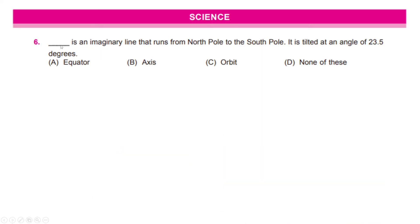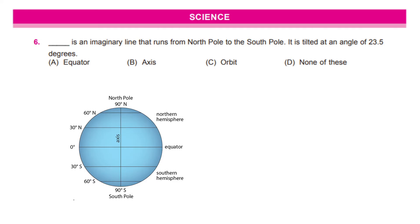Let us read the next question in this science section which reads, dash is an imaginary line that runs from North Pole to South Pole. It is tilted at an angle of 23.5 degrees. Which of these lines is it? Well, if you know the answer, mark it. But let us first familiarize ourselves with the lines.